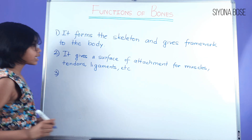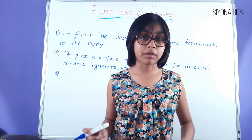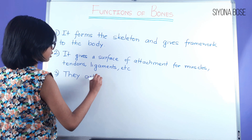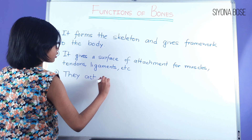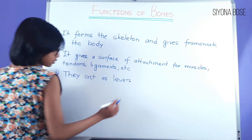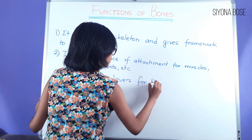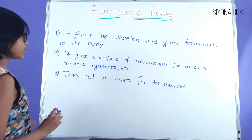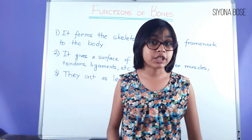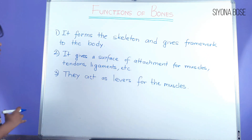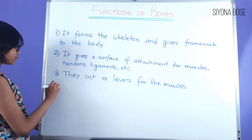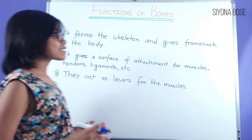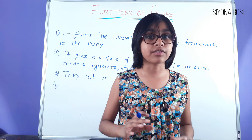Thirdly, bones act as levers for the muscles, helping them work more efficiently. Without bones, we would not be able to move. Fourthly, bones make up 97% of the calcium and phosphorus of our body.